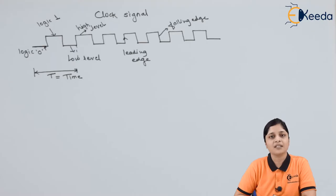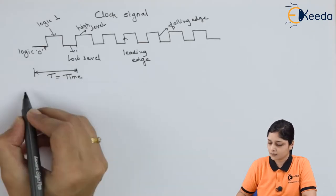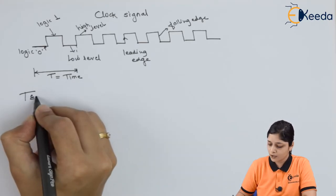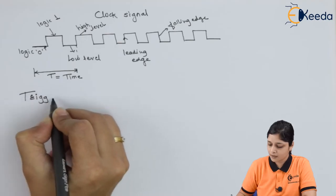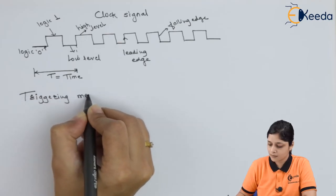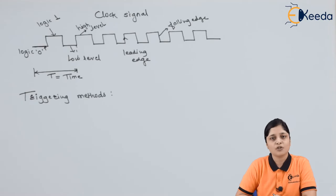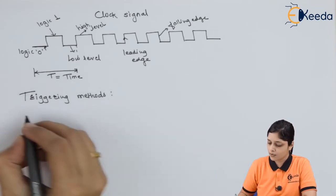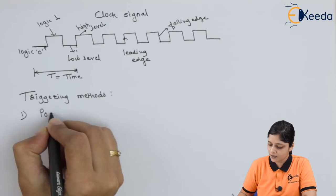Now we are going to see the triggering methods. There are two types of triggering methods: positive edge triggering and negative edge triggering. First of all, we will see positive edge triggering.